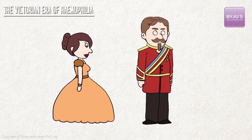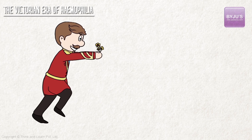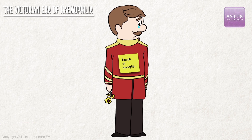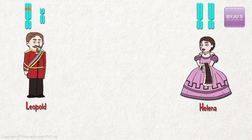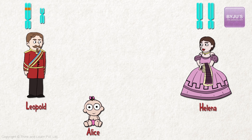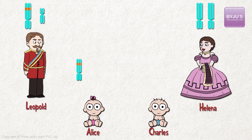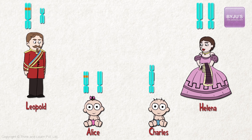Prince Leopold had hemophilia, which led to his death at the young age of 30 because of blood loss after he slipped and fell. After being rejected by many women he pursued because of his genetic disorder, he finally found a match in Princess Helena. Leopold and Helena enjoyed a happy, although brief marriage. In 1883, Leopold became a father when his wife gave birth to a daughter, Alice. He died shortly before the birth of his son, Charles Edward. Alice was a carrier and gave birth to a son who inherited hemophilia from her. Charles, though, inherited the right genes from his parents without the mutation and was saved from hemophilia.